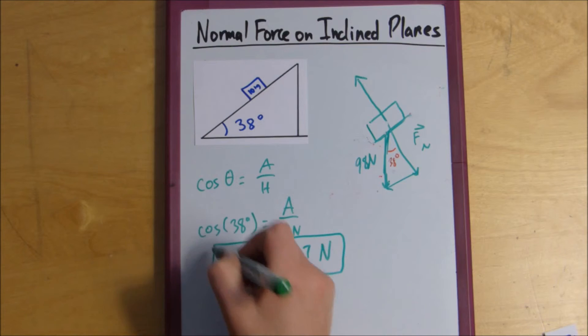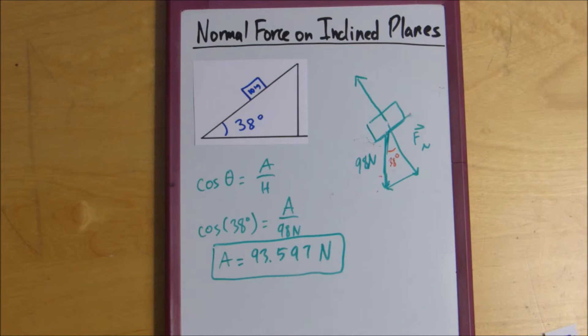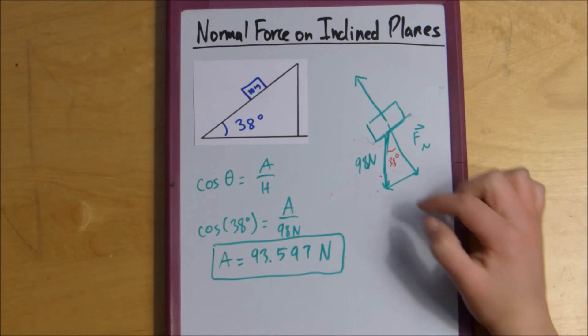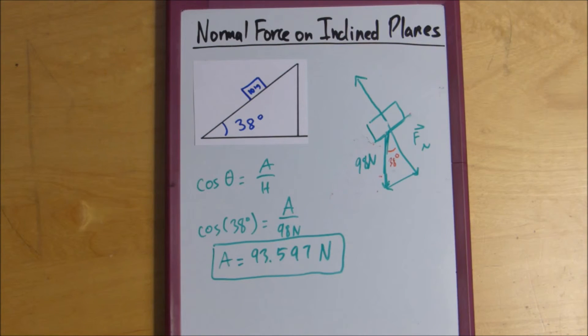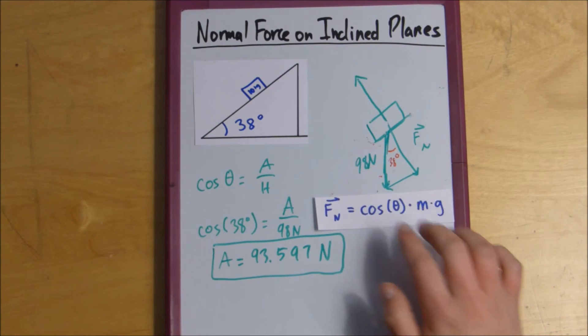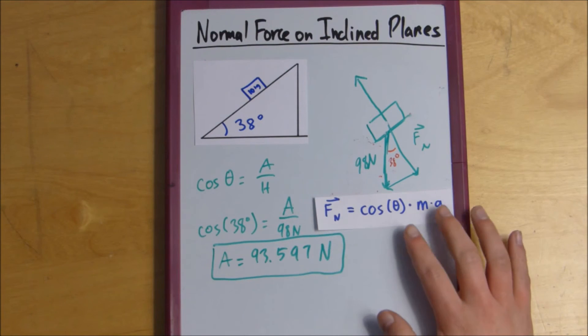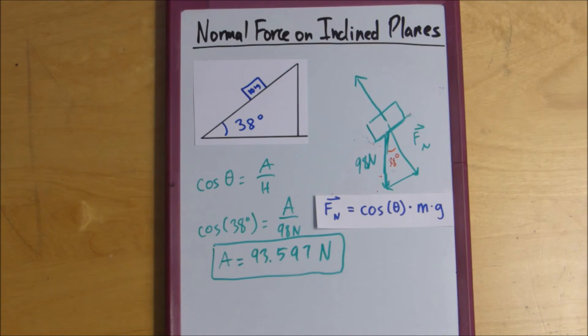And that is our normal force. So you can see that if you don't want to go through this whole thing and make a new triangle, figure out the angle, blah blah blah, you can just memorize this quick little trick. Force normal equals cosine of theta times mass times gravity.